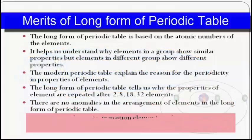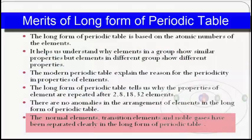The next and last merit is that normal elements, transition elements, and noble gases are clearly separated in the long form of the periodic table. It also clearly separates metals from non-metals. There is no such clear separation in Mendeleev's periodic table. Comparing the two, the long form of the periodic table, which we call the modern periodic table, gives much better results.